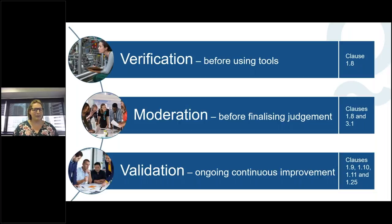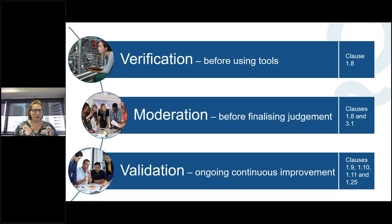The big one — the one explicitly described in the standards — is validation, or assessment validation. Validation occurs after assessment is finalised and it retrospectively reviews the assessment system and practice to enable your RTO to continuously improve what you do and how you do it. The term 'validation' is defined in the standards, 'independent validation' is defined in the standards, and 'statistically valid' is defined in the standards. ASQA will always use those words in the context of those standards definitions.